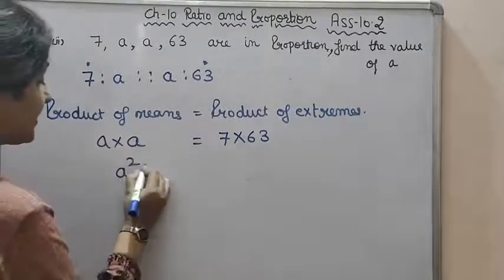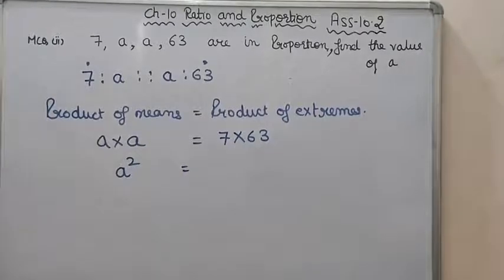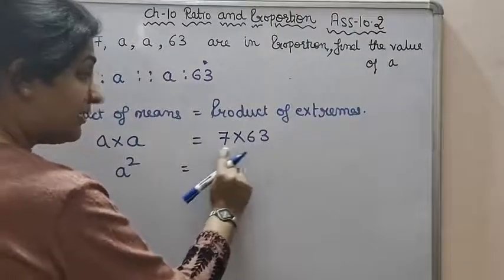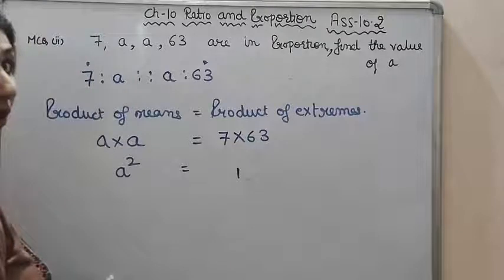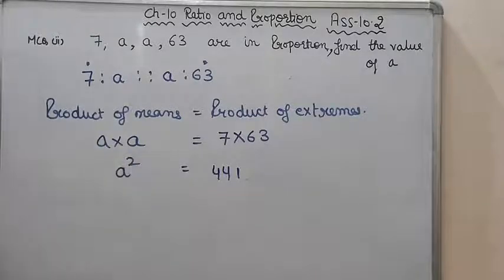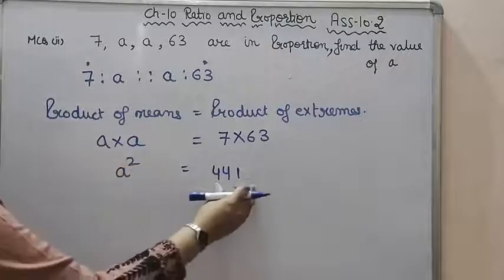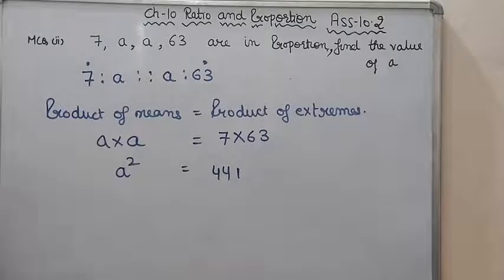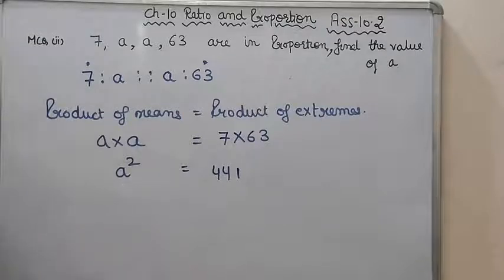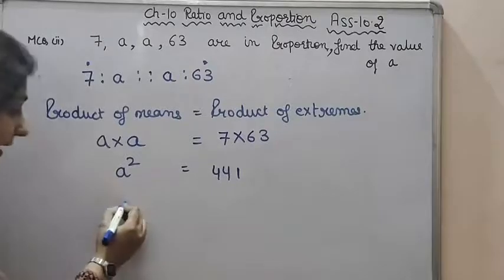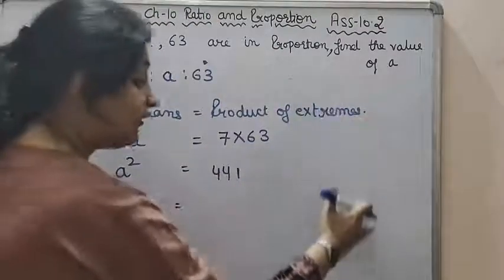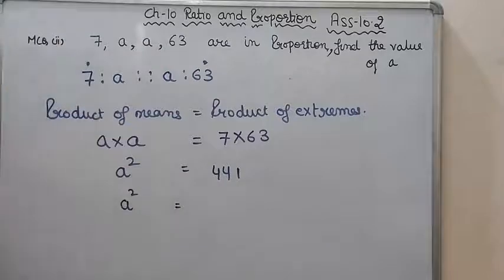Now, A into A is A square. Now, seven into sixty-three, we'll multiply. Seven three is twenty-one, left with two. Seven six is forty-two, we'll add two, that becomes forty-four. So four hundred forty-one. We have to find out value of A. But here it is A square. I've already told you, when on one side you have square, on other side only a number, then in that case, you have to convert both terms to square. So we have to find out what is the square of 441. You will do it by finding out the factors. It is the square of twenty-one.